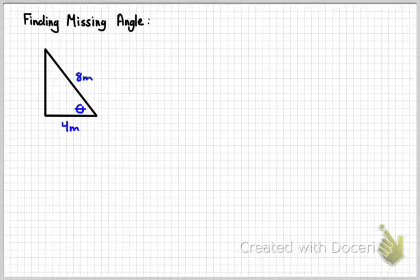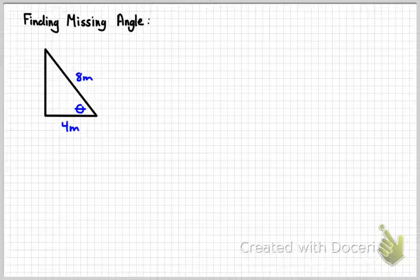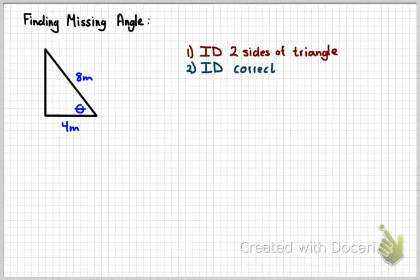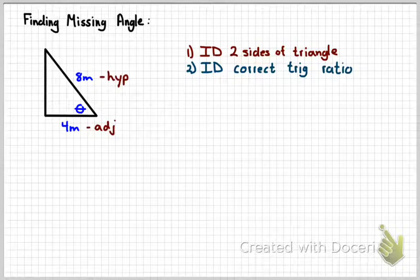The other thing you might be asked to do is find a missing angle. So in this particular triangle, I've got two sides that are known, and I wanted to figure out what that angle is. So same first two steps. Identify the two sides you're going to be working with and the correct trig ratio. Here I've got the hypotenuse and the adjacent side.